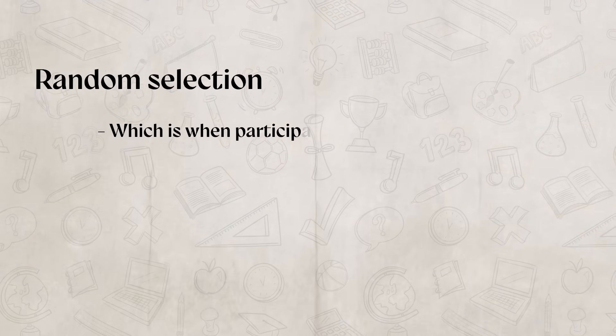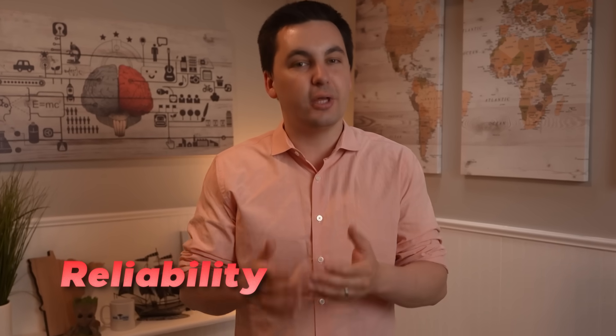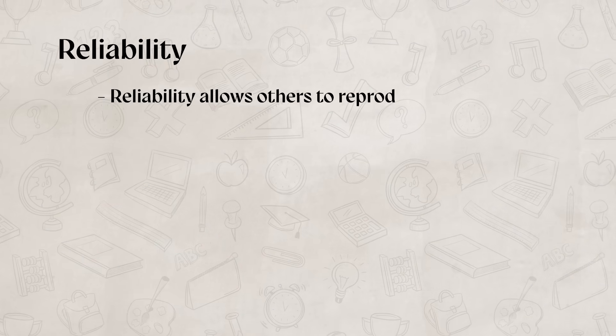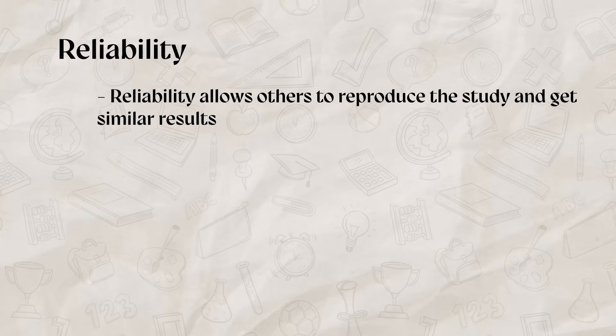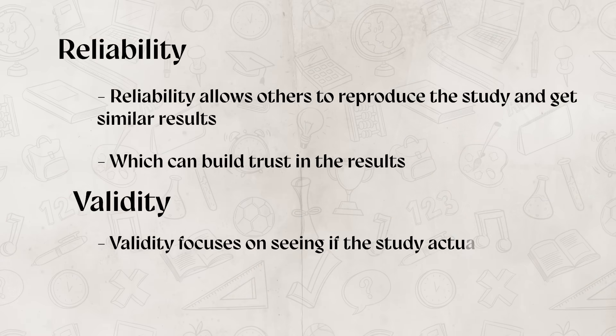Don't get random assignment confused with random selection, which is when participants are randomly selected to be part of a study — make sure you keep them straight on the AP test. Also remember that an experiment should demonstrate reliability and validity. This is supported by using clear operational definitions, which make it easier for other researchers to replicate the study. Reliability allows others to reproduce the study to get similar results, while validity focuses on whether the study actually measures what it claims to measure.